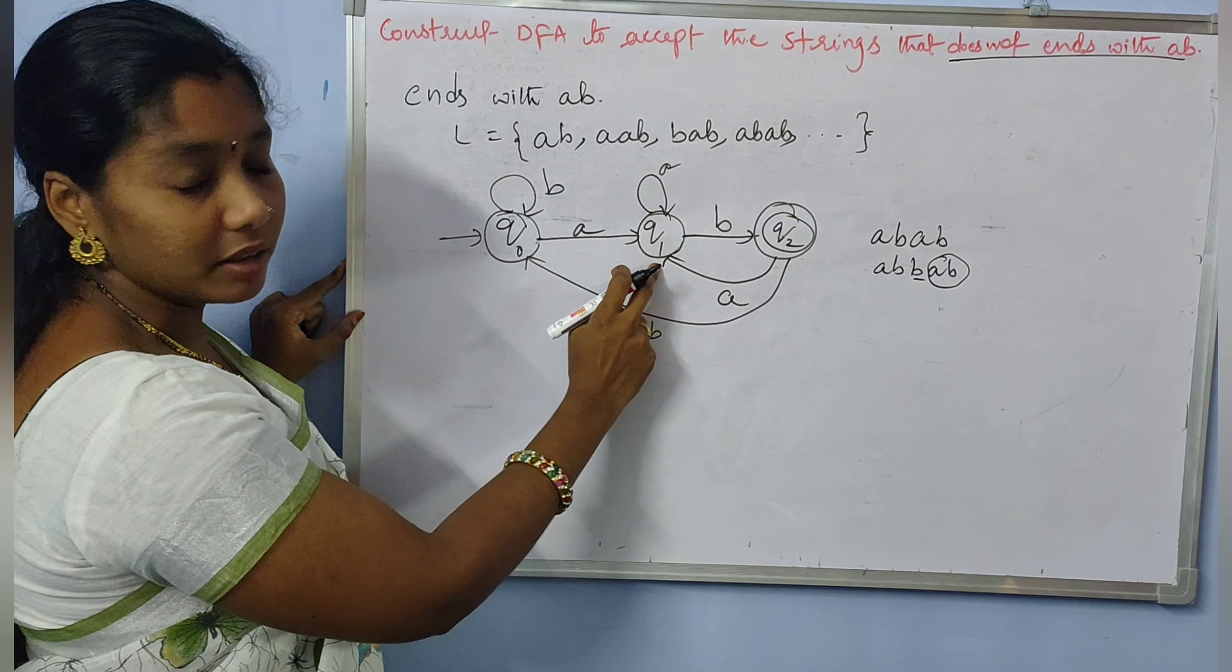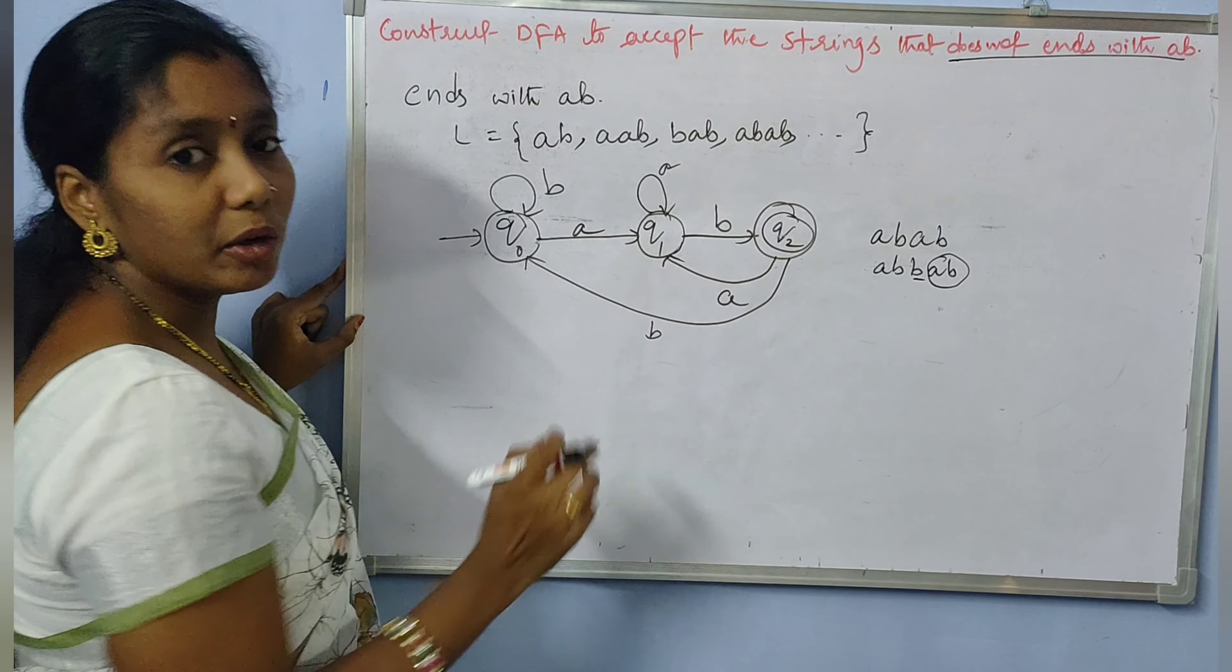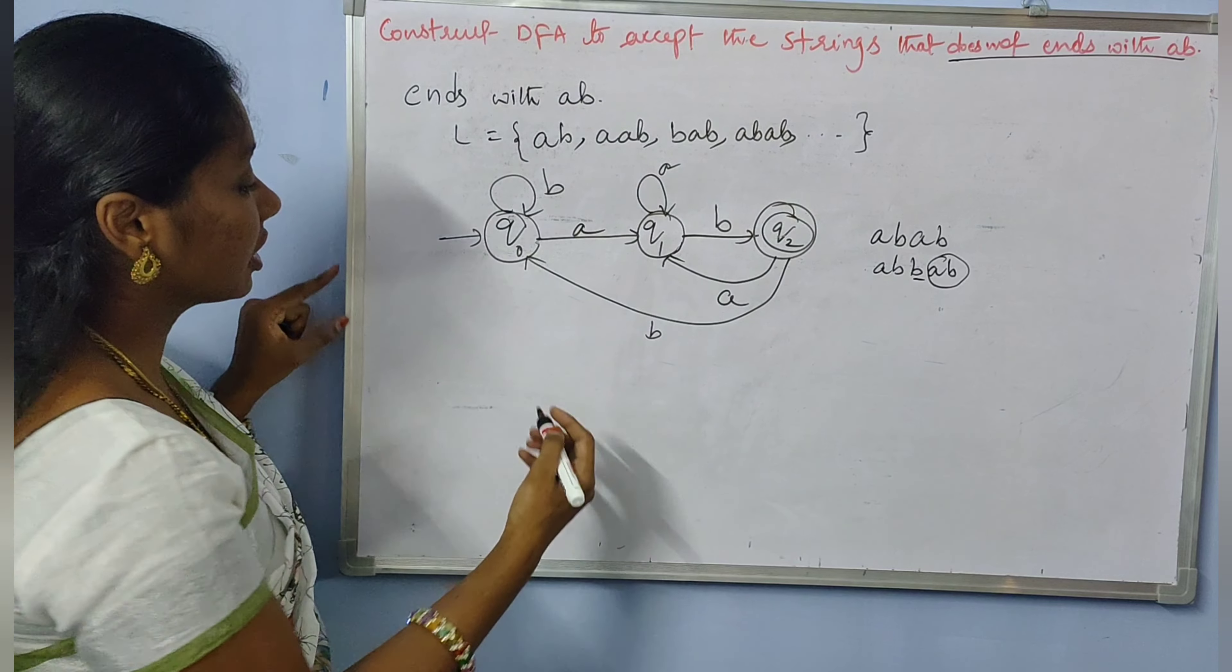So there are two non-final states, we replace them with final states. And the final state we treat as non-final state. So we complement the same DFA.